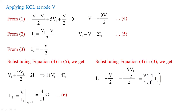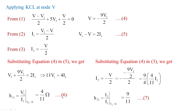Substituting equation 4 into equation 3: i2 = −v/2 = −(−9v1/2)/2 = 9v1/4. Then substituting from equation 6 (v1 = 4·i1/11) gives i2 = 9·i1/11. So h21 (current gain when output port is short-circuited) = 9/11. Since it is a gain, it has no units. This is equation 7, and h11 and h21 are now obtained.